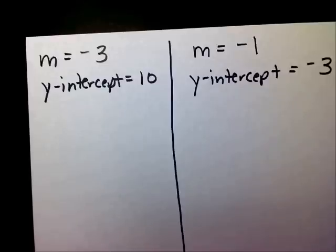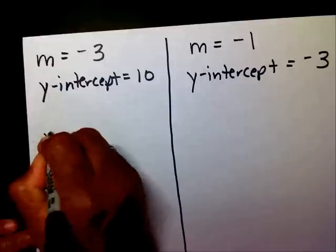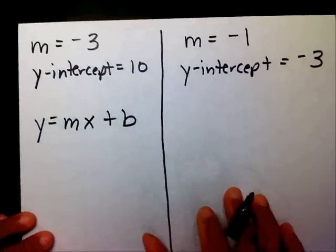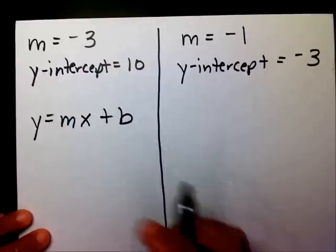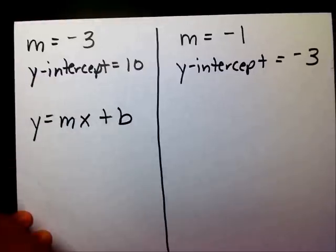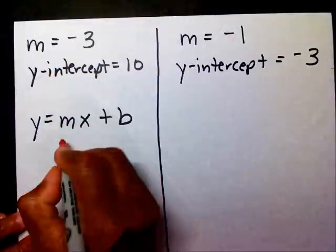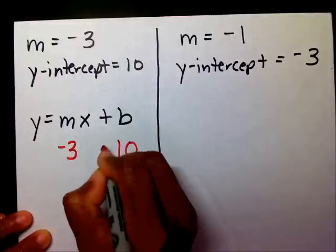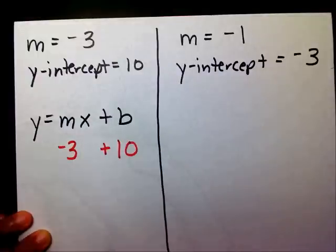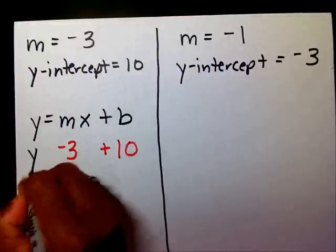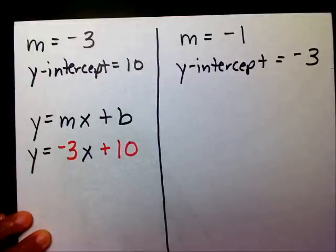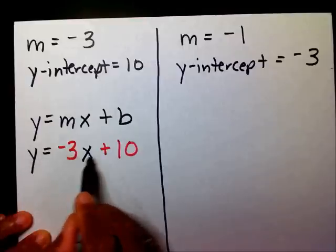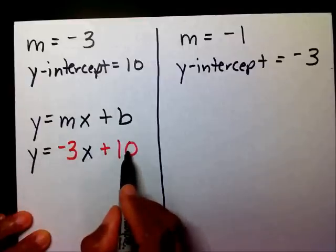I know that y equals mx plus b. So I can substitute negative 3 in for m and positive 10 in for b, and bring down my y equals and my x. Therefore, y equals negative 3x plus 10, which is slope-intercept form.